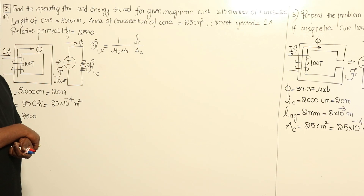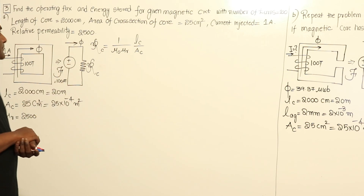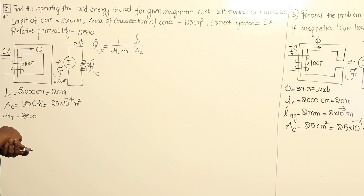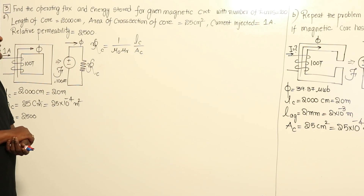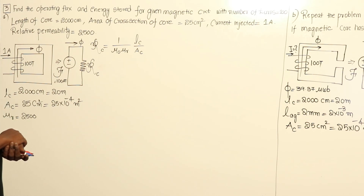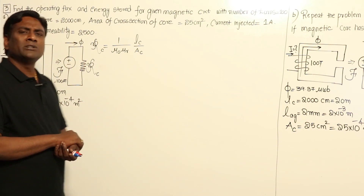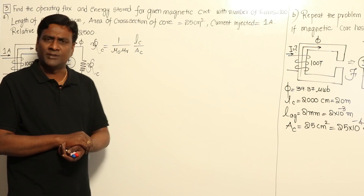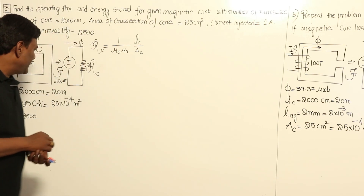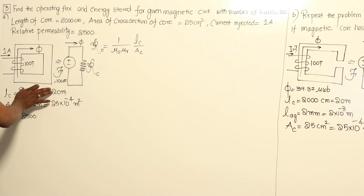In this problem, find the operating flux and energy stored for a given magnetic circuit with: number of turns = 100, length of core = 2000 centimeters, area of cross section of core = 25 centimeter square, current injected = 1 ampere, and relative permeability = 2500. As I mentioned before, we are not supposed to remember any formulas at all.